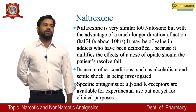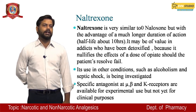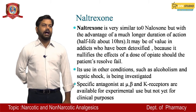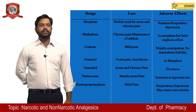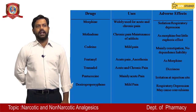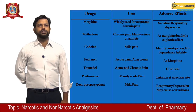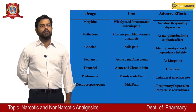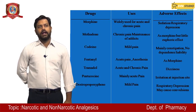Naltrexone's half-life is about 10 hours in the body. The following are certain drugs, their uses, and adverse effects. Morphine is widely used for acute and chronic pain. Its adverse effects include sedation and respiratory depression.